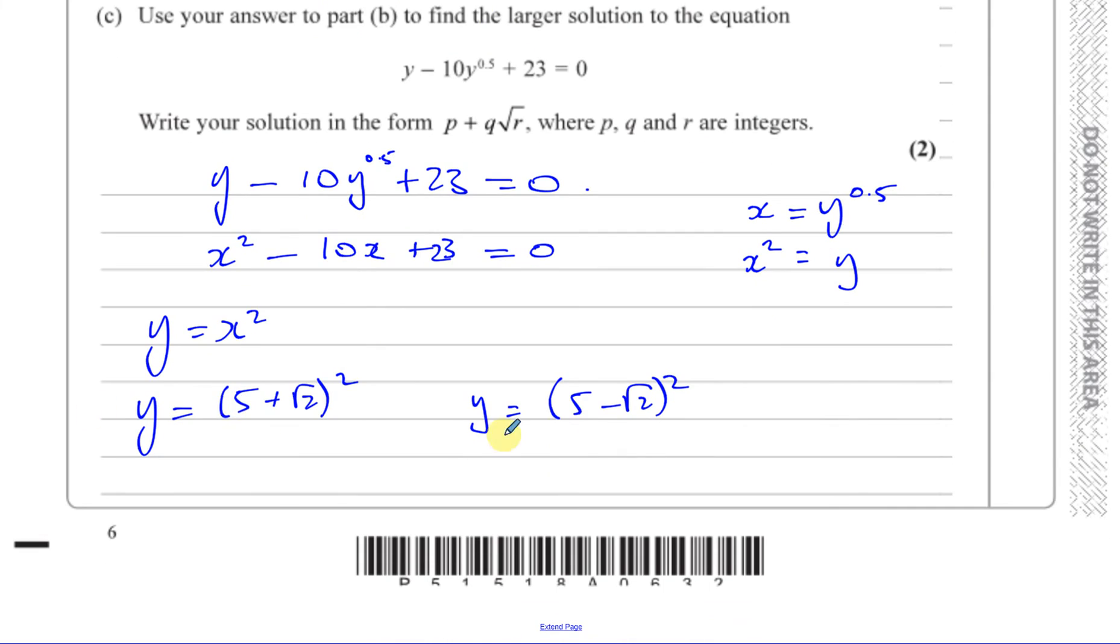So the larger solution, of course this is going to be the larger solution. Because this one, you're going to have 5 minus root 2, so that's smaller. So we're going to go with this one. This is the larger. This one is going to be the larger solution. This is a larger number squared. So you're going to have (5 + √2) squared. So that's going to be 25 plus 2 times 5 times root 2, which is 10√2, plus (√2) squared, which is 2. So you end up with 27 plus 10√2. And that's the answer to that question. That's now what your y is. y is equal to x squared. We can see that from the way the equation is set out.